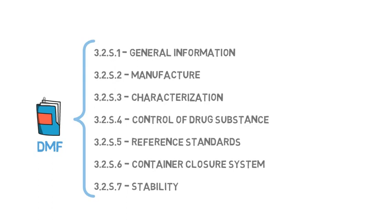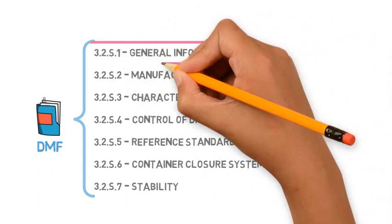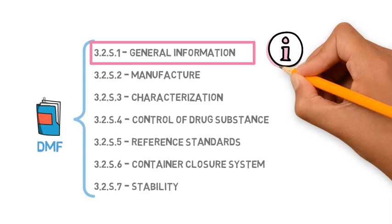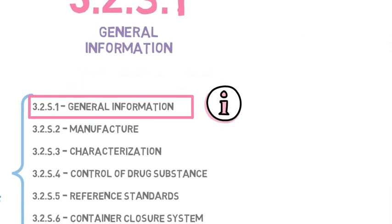In this video, we will talk about the first one, Section 3.2.s.1. This is a very simple section of the DMF because it's usually informative and does not present many issues in terms of compliance with regulations.